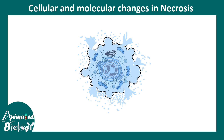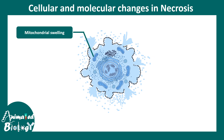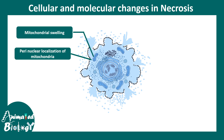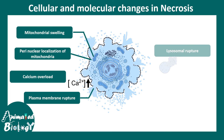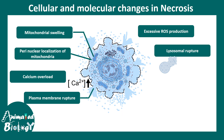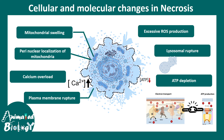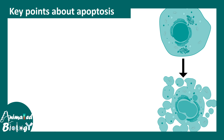Let's review the cellular hallmarks of necrosis and apoptosis. In necrosis: mitochondrial swelling, perinuclear localization of mitochondria, calcium overload, plasma membrane rupture, lysosomal rupture, excessive ROS production, ATP depletion, and uncoupling of the electron transport chain.